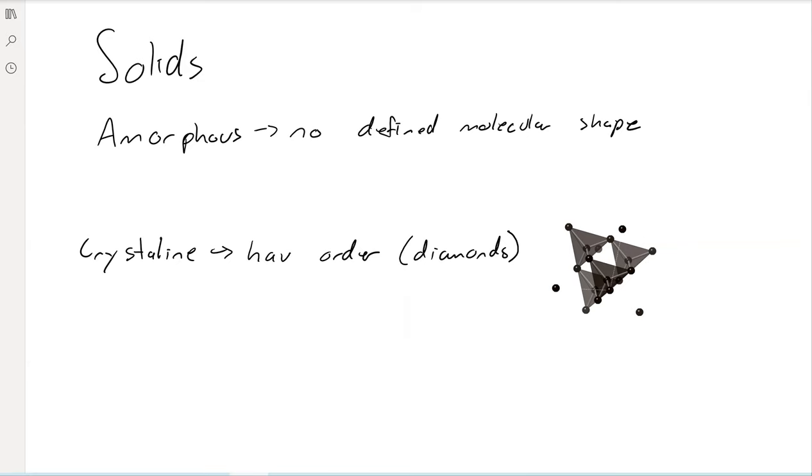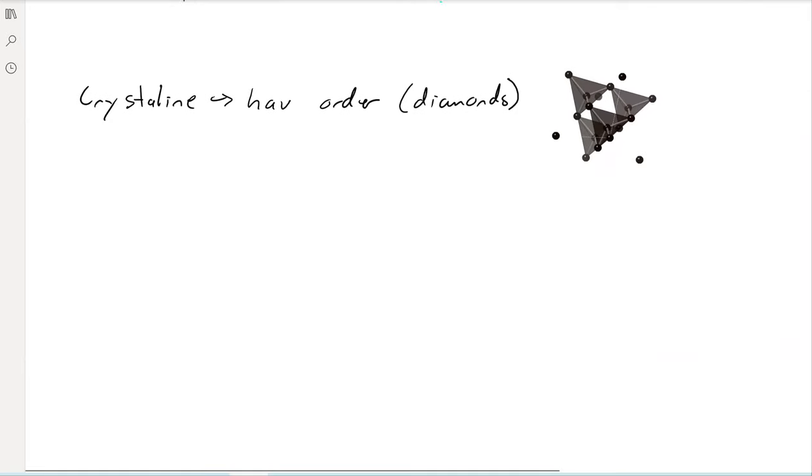That's one way you can classify solids. Another way is by what's keeping them together. We can have molecular solids, ionic solids, and atomic solids.